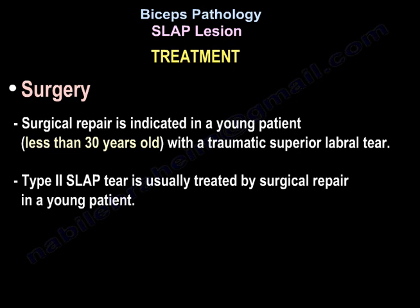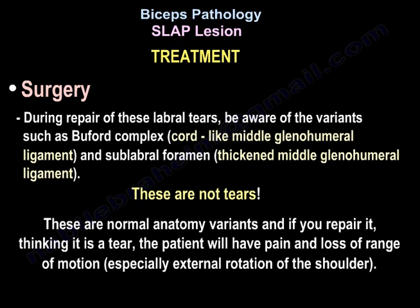Type 2 SLAP tear is usually treated by surgical repair in a young patient. During repair, be aware of variants such as the Buford complex, cord-like middle glenohumeral ligament, and sublabral framing with a thickened middle glenohumeral ligament. These are normal anatomy variants — not tears. If you repair them thinking they are tears, the patient will have pain and loss of range of motion, especially external rotation of the shoulder.